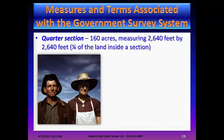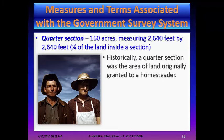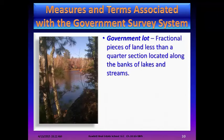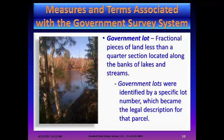A quarter section is 160 acres, measuring 2,640 feet by 2,640 feet — a quarter of the land inside a section. Historically, a quarter section was an area of land originally granted to a homesteader. Today, the 160 acres is still used to establish the limits of homesteaded property outside the boundaries of a municipality. A government lot consists of fractional pieces of land less than a quarter section, located along the banks of lakes and streams, identified by a specific lot number which became the legal description for the parcel.